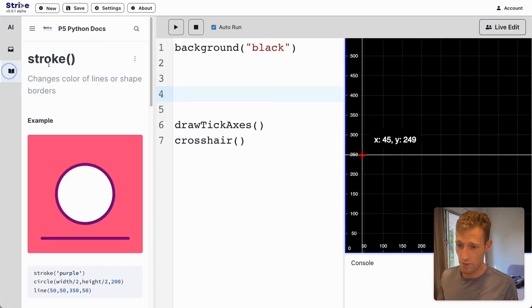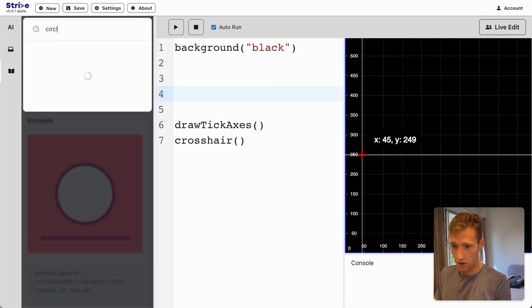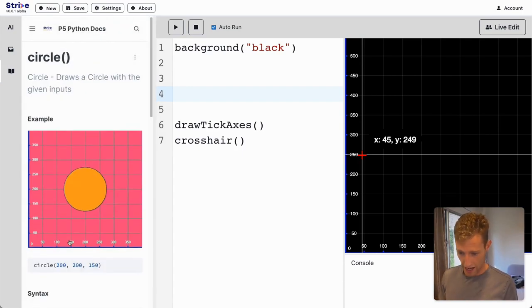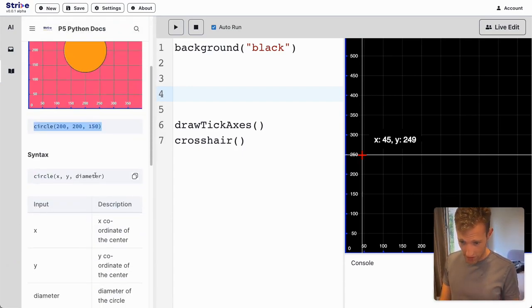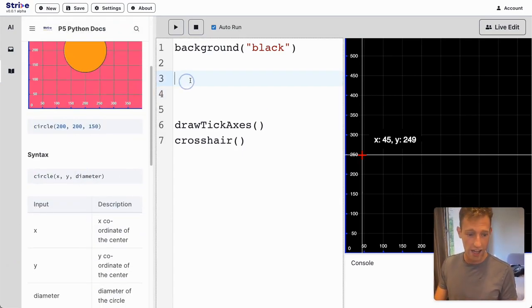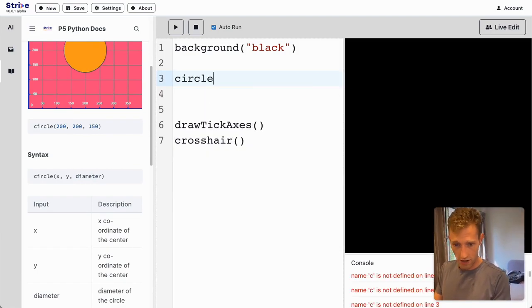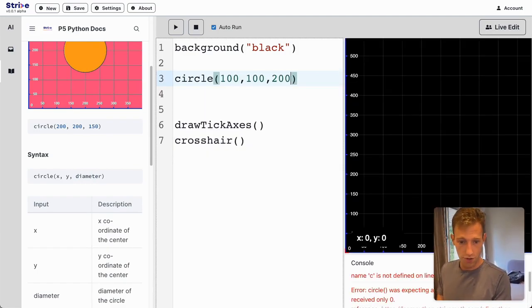To learn about circles and ellipses, I go into my documentation and search for circle. I see I need three numbers: x, y, and diameter. So I'm going to write circle 100, 100, 200.